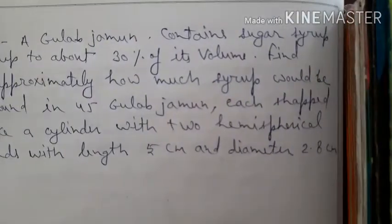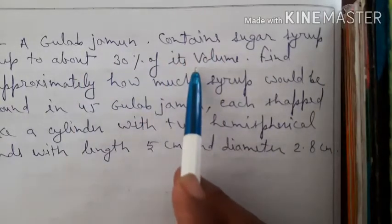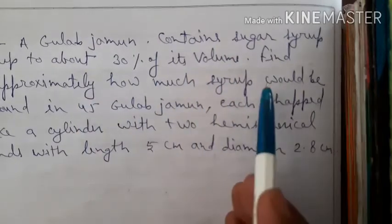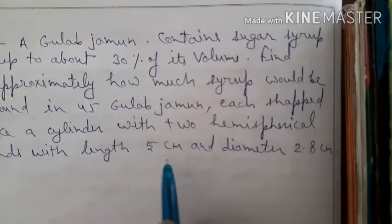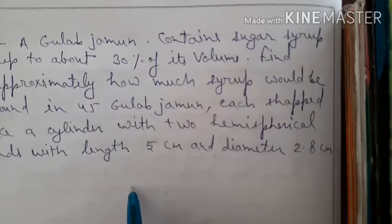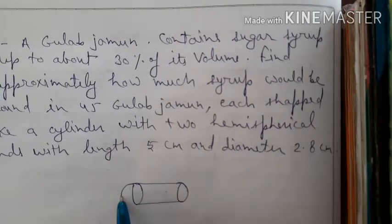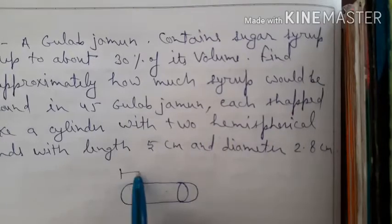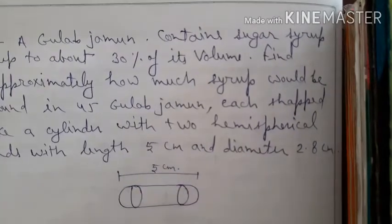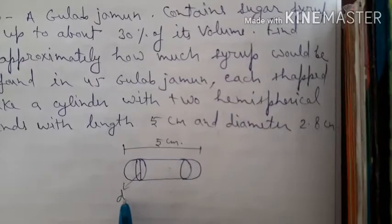In question number 3, a gulab jamun contains sugar syrup up to about 30% of its volume. Find approximately how much syrup would be found in 45 gulab jamuns, each shaped like a cylinder with two hemispherical ends, with length 5 cm and diameter 2.8 cm. So radius equals 1.4 cm.